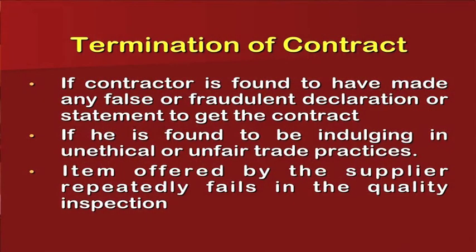Termination of contract: If contractor is found to have made any false or fraudulent declaration or statement to get the contract, then you can terminate the contract. If found to be indulging in unethical and unfair trade practices, then also termination of contract is valid. If items offered by the supplier repeatedly fail quality inspection, you can terminate the contract. There should be a clause for the termination - if the buyer has given a contract to a supplier and the supplier is using unfair practices in terms of payments, giving fraud goods, quality below specifications or using unethical practices, then the buyers can cancel the contract but this has to be in accordance with the clauses.